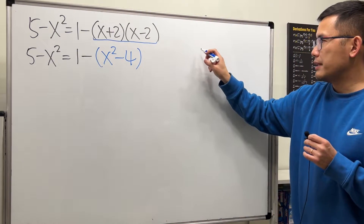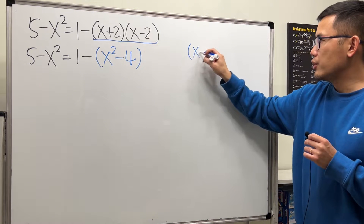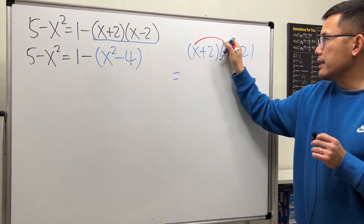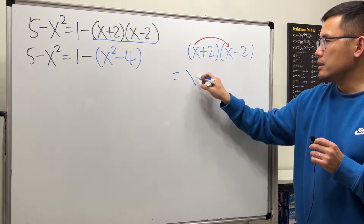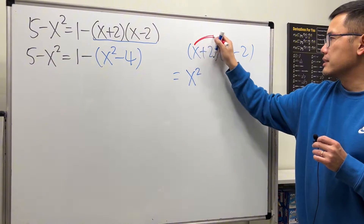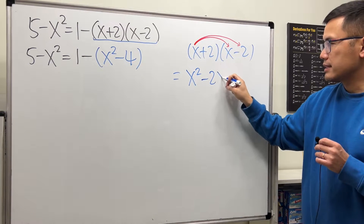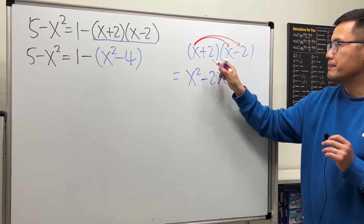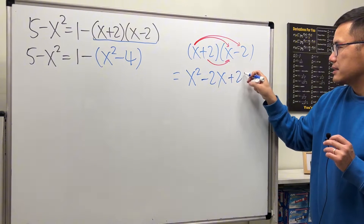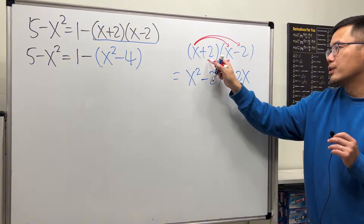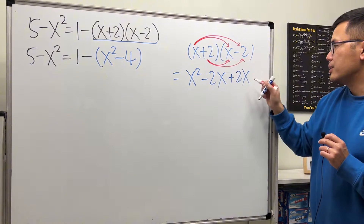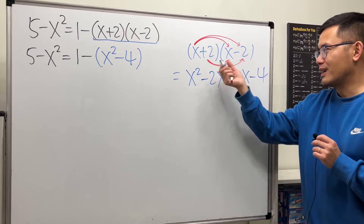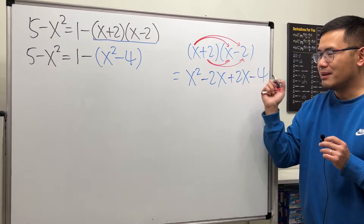You can also multiply this out using FOIL. We take x times x, that's x squared. Then x times negative 2, that's negative 2x. Moving to the 2: 2 times x gives plus 2x. Lastly, 2 times negative 2 is negative 4. That's the FOIL method for multiplying binomials.